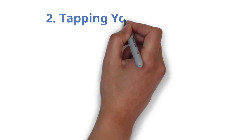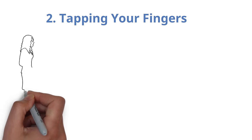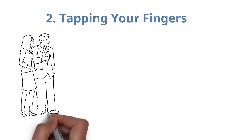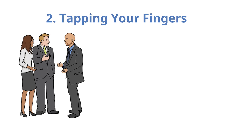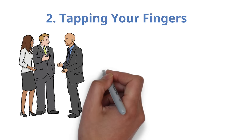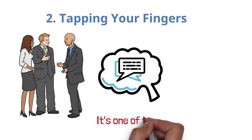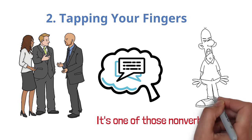Number 2. Tapping your fingers. You look impatient and even apprehensive about waiting when you tap your fingers. If you tap your fingers, keep in mind that it's one of those nonverbal cues that might irritate people.